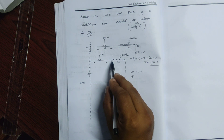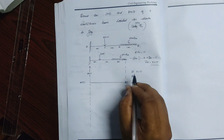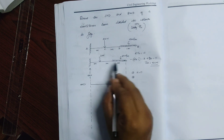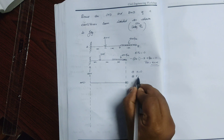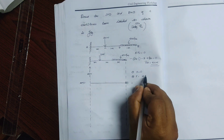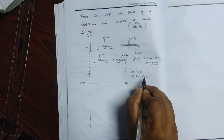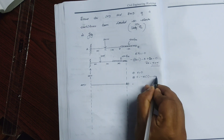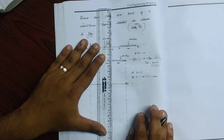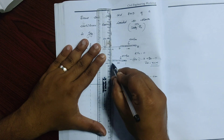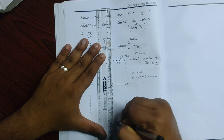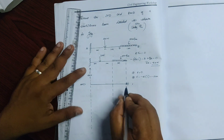For the UDL, the equivalent load acts at the centroid. The active distance is 1 meter into 1. So it is negative — minus 2. Now we can plot these points. That gives us minus 2.